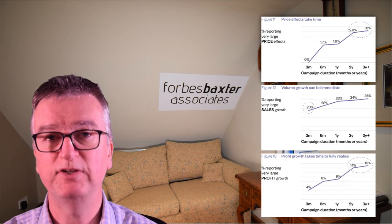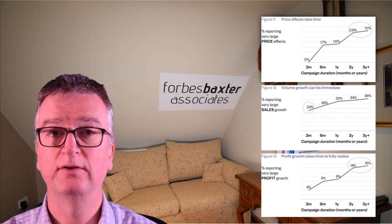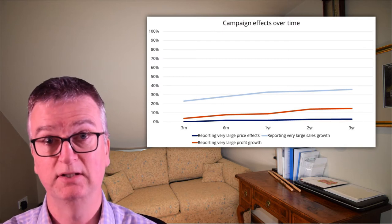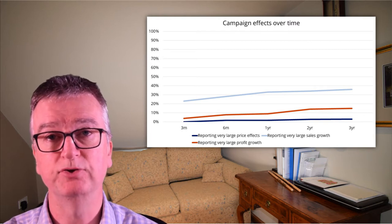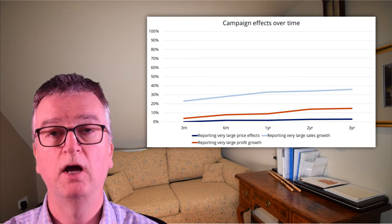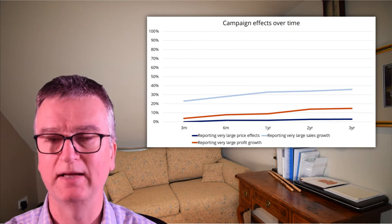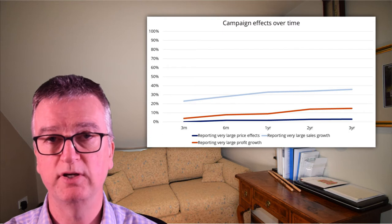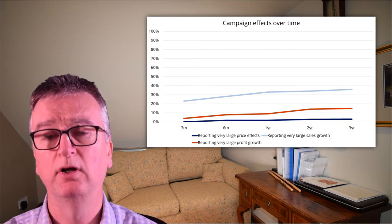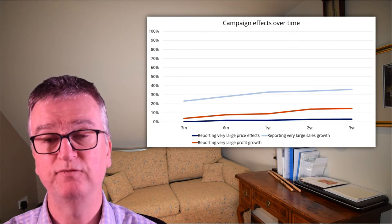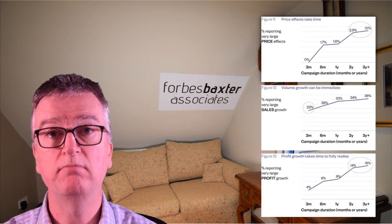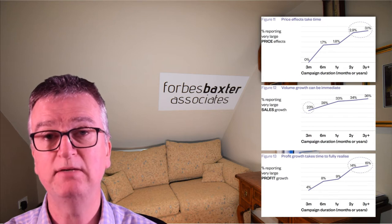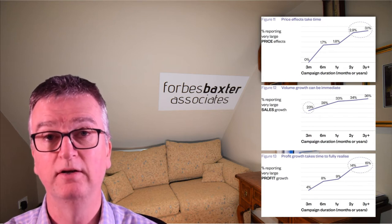It's actually quite deceptive — it's creating a visual impression that doesn't reflect the true nature of the data. If you plot that same data from figures 11, 12, and 13 honestly, this is what it looks like. When you see data like this, you reach some conclusions that Binet and Field don't. For example, over 60% of these successful campaigns do not show large effects on profit, price, or sales, even over three years. Contrary to what you might think from figure 11, only a tiny proportion of successful campaigns have a very large effect on price even after three years, and that number hardly grows — it goes from 2.9% to 3.1% in the last year. You can only make that seem like a big change if you chart it like Binet and Field have done in figure 11.